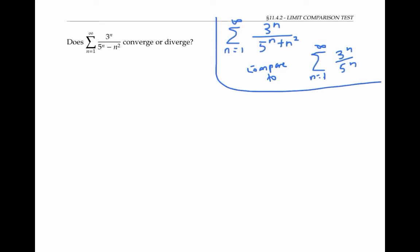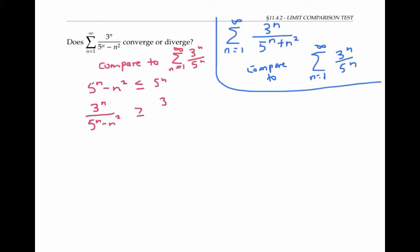But if we change the problem very slightly and look instead at the sum of three to the n over five to the n minus n squared, things start to go wrong. If we now try to compare to the same series, we get the inequality: five to the n minus n squared is less than or equal to five to the n. Therefore, three to the n over five to the n minus n squared is greater than or equal to three to the n over five to the n, since dividing by a smaller number gives a larger fraction. But this inequality is not useful to us — being greater than a convergent series doesn't guarantee convergence or divergence, so we can't conclude anything.